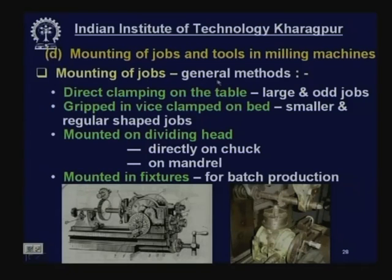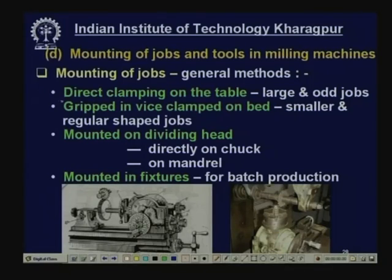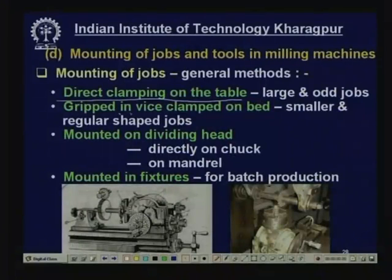Mounting of jobs in milling machines — general methods. First, direct clamping on the table: the milling machine has a large table, and the job can be mounted directly on it, especially when the job is larger in size or odd in shape and only one or two pieces have to be made. Clamping is done with clamps, T-bolts, supporting shoes, V-blocks, and angle plates as required. Second, gripped in a vise: if the job is small enough and of regular shape and is to be produced in reasonable quantity, grip it in a vise fixed on the table.